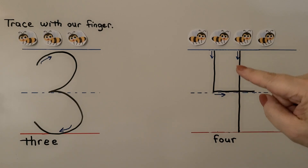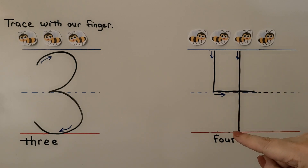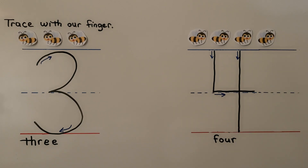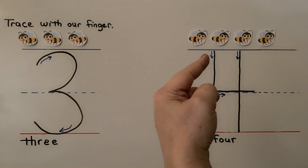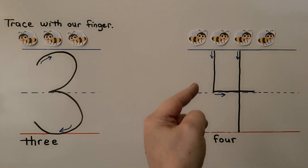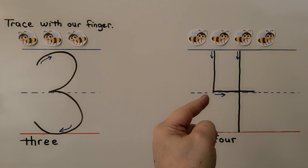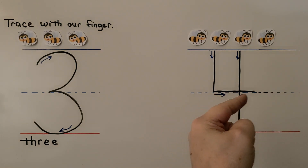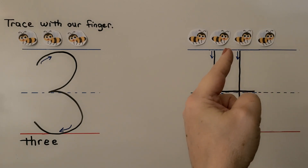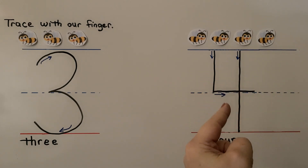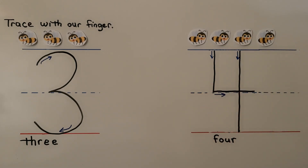Then we start here and come straight down. We can do it with our left hand. We start here, we come down, we go across, then we come back up here and we come straight down. Four.